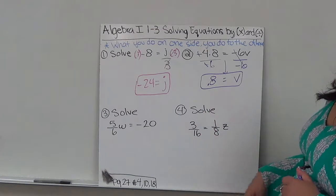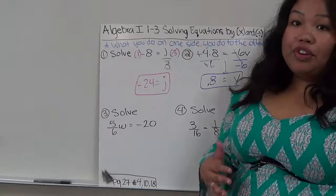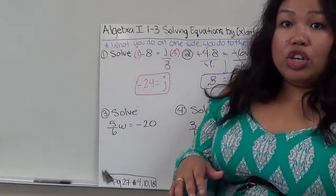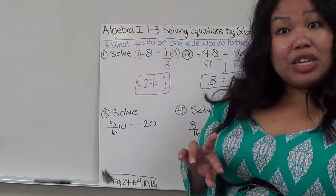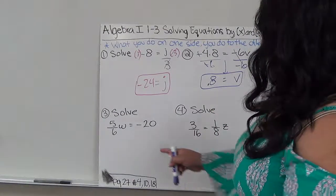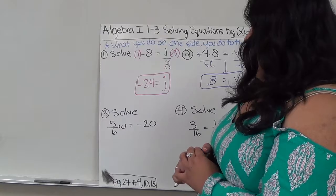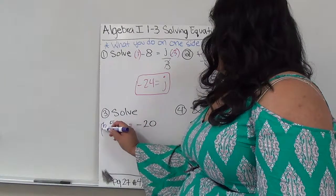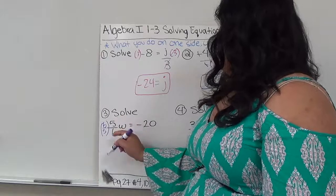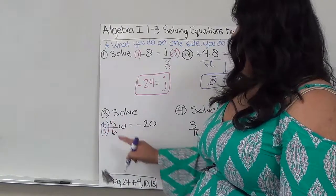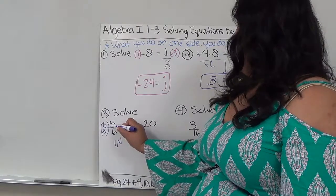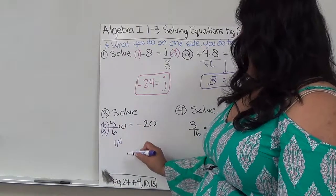The next one, I'm dealing with fractions. Now fractions, in order to do the opposite, basically I just have to flip it. So if I have 5 over 6, the opposite of 5 over 6 is to multiply it by 6 over 5. That way the 6 and 6 cancel out and the 5 and 5 cancel out, leaving me with just W. So this cancels out with this and this cancels out with this and I have just W.